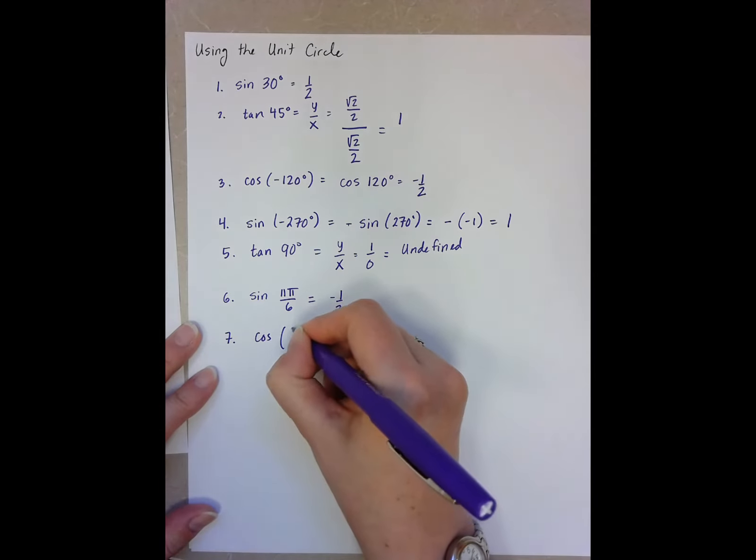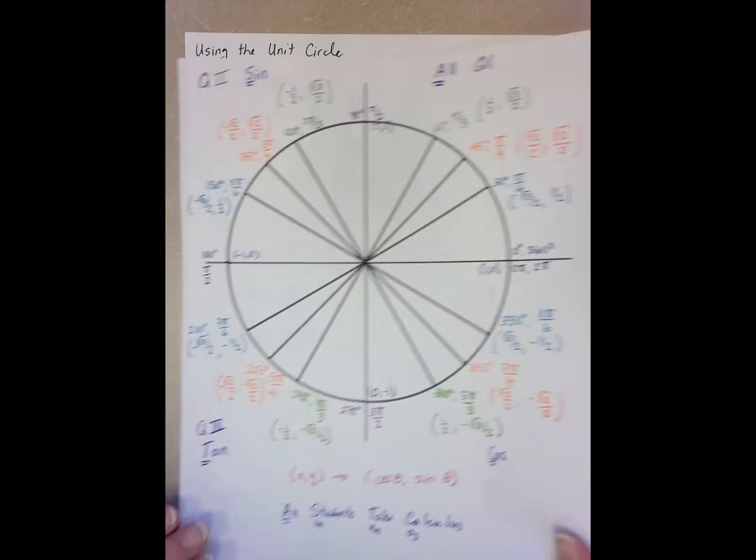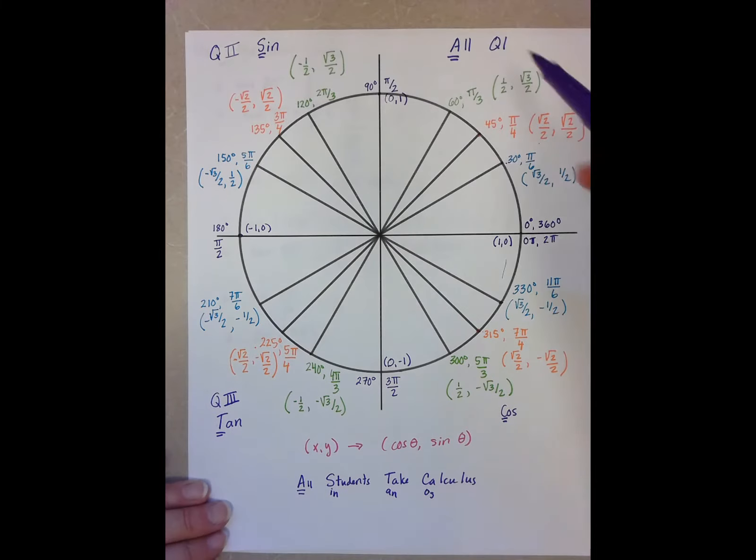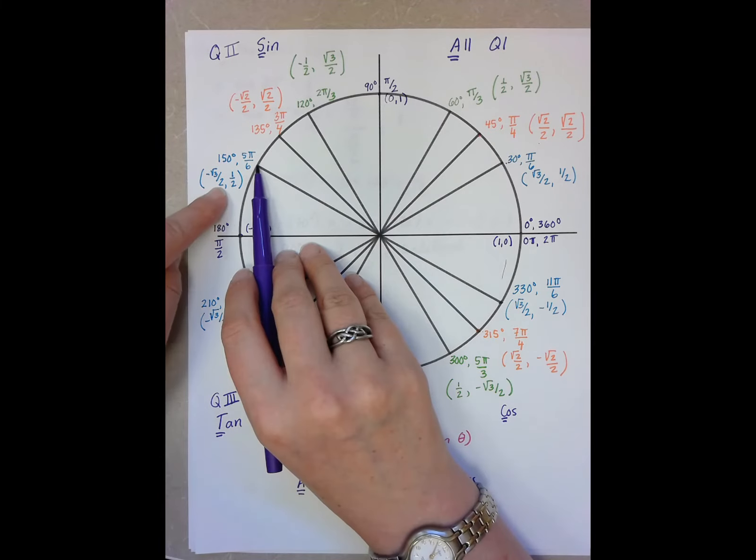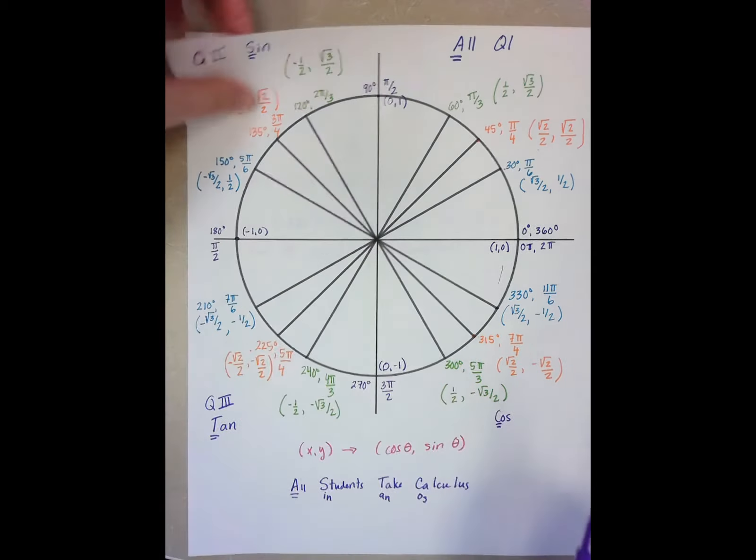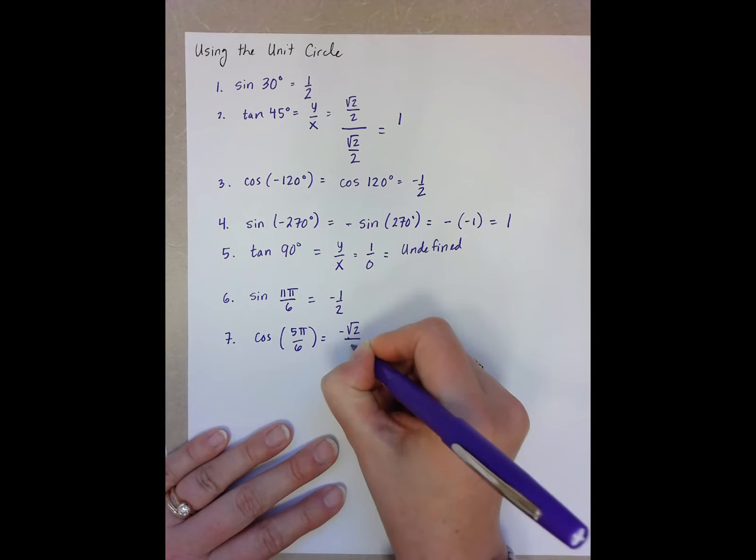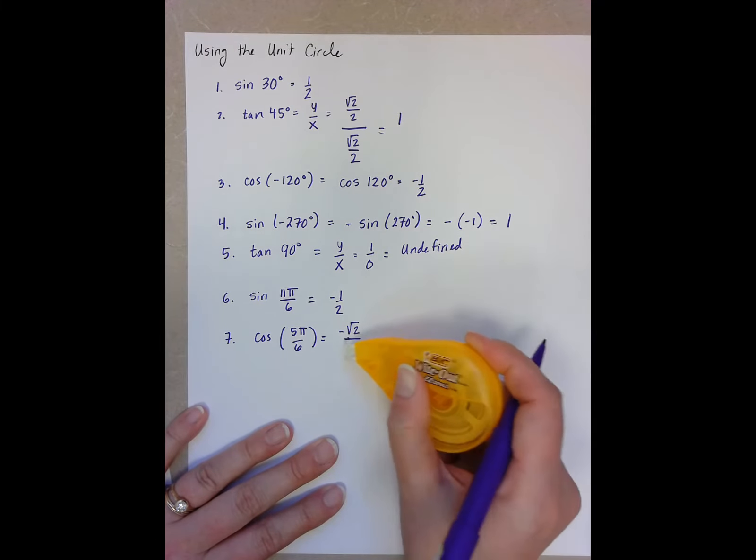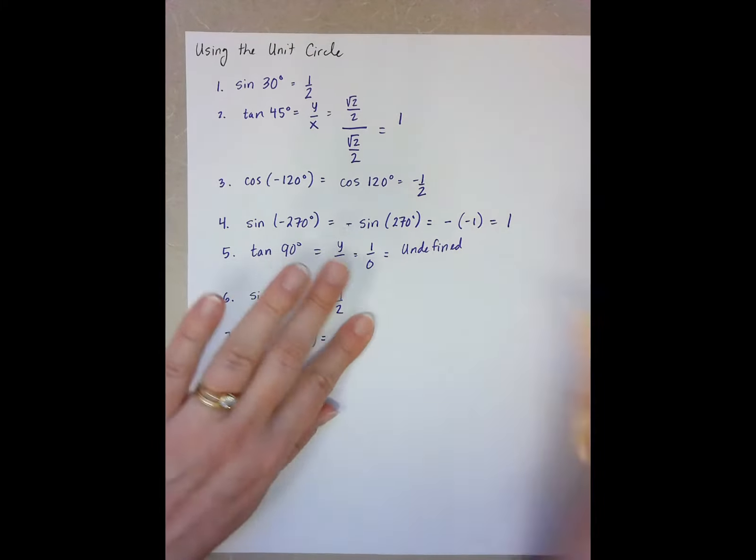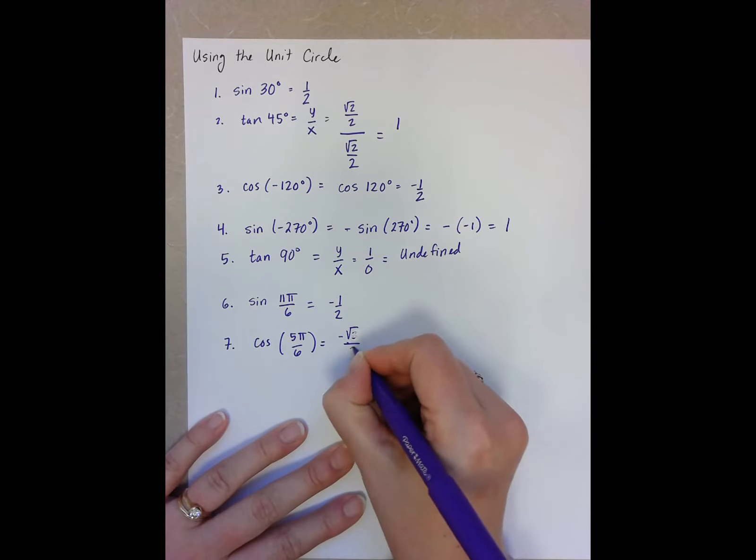Cosine of 5 pi over 6. 5 pi over 6 is right here at 150 degrees. Cosine is the x-coordinate, so it's negative root 3 over 2. Ah, you say 3 and then you write 2. Transposing the numbers. So here's root 3 over 2.